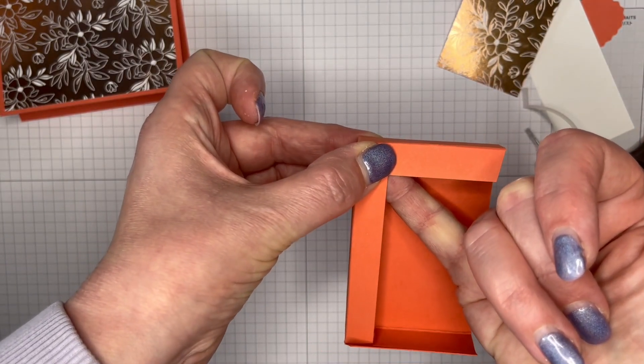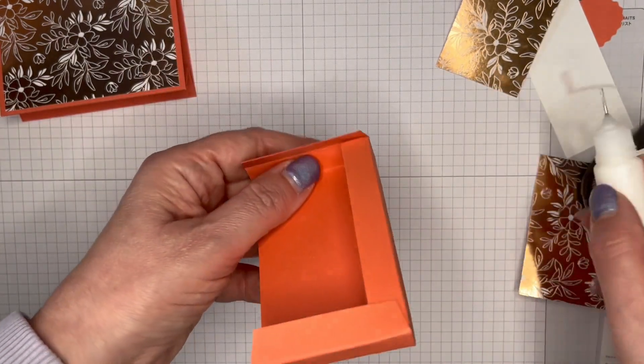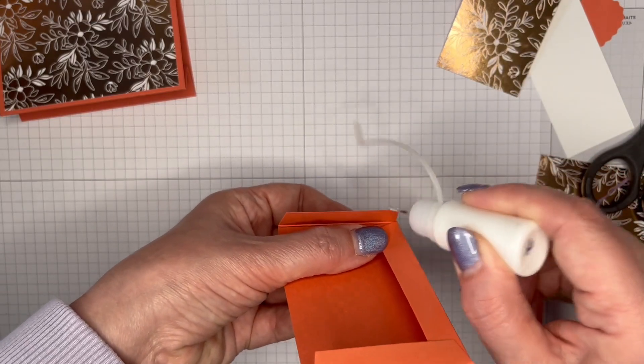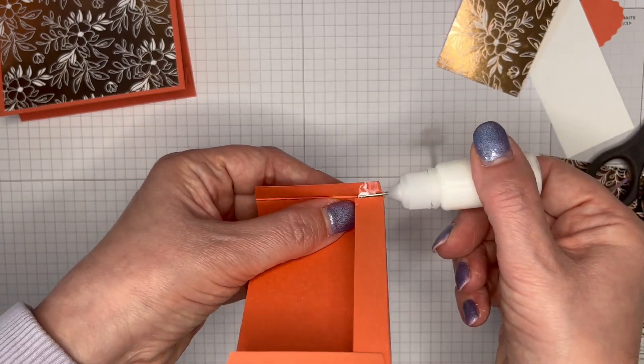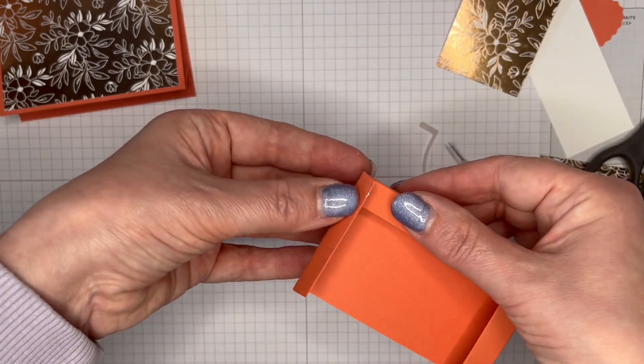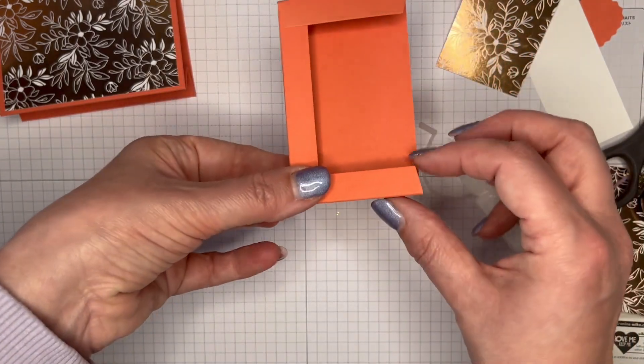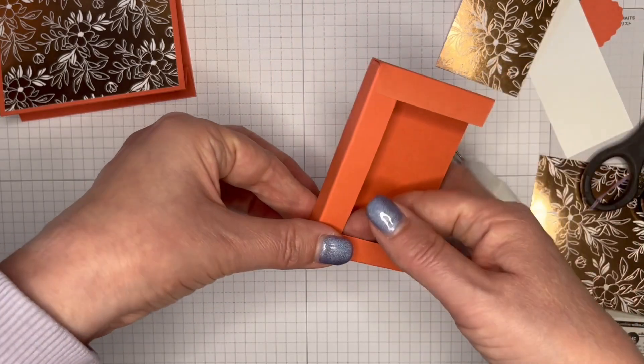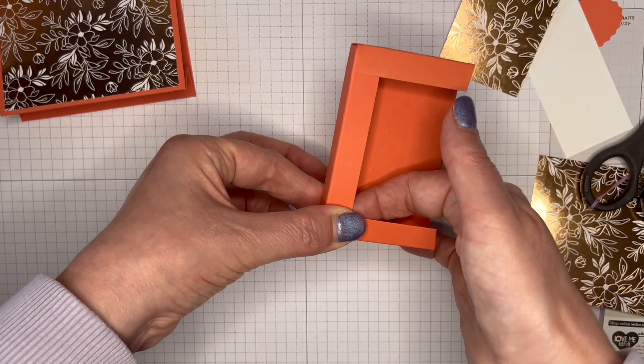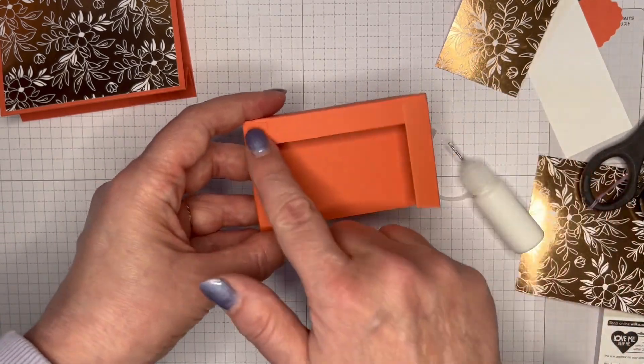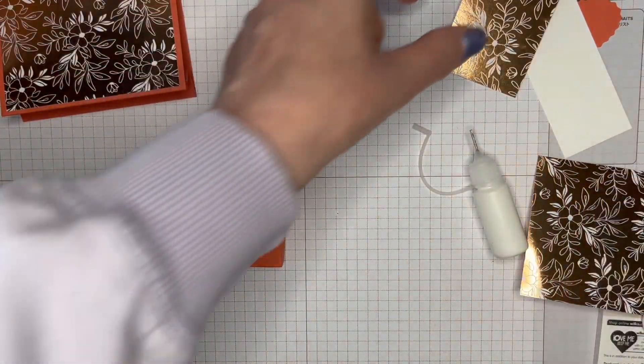So I like to put my pinky underneath so that I've got that set. And again, just bringing that over, trying to make sure that you've got that piece straight. And then just give it a press.